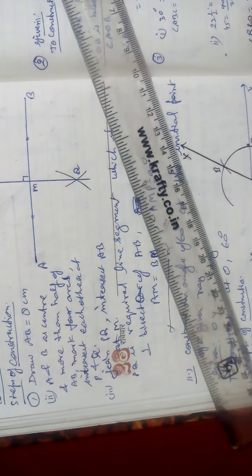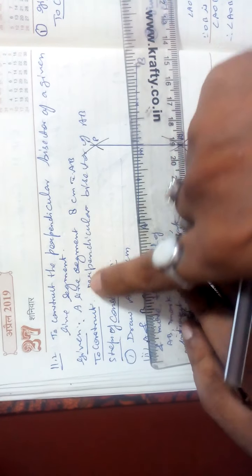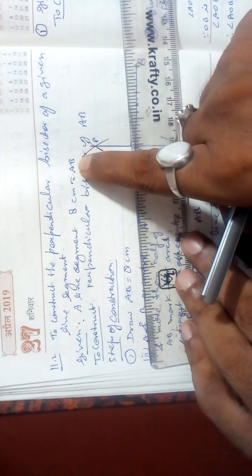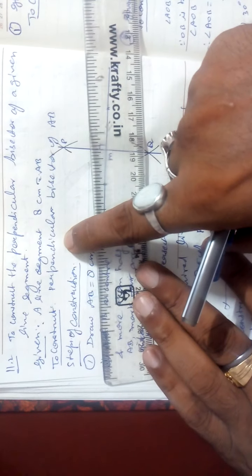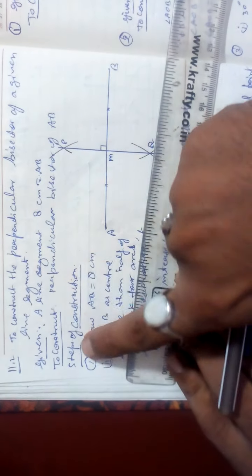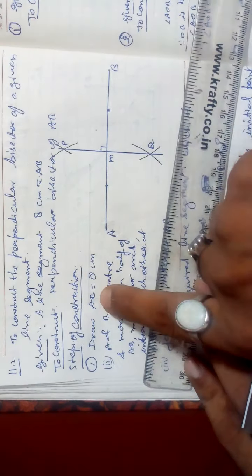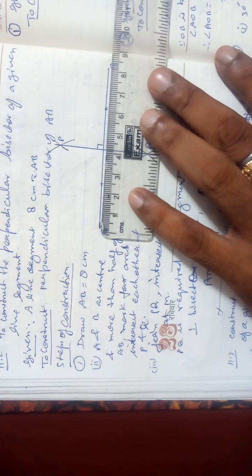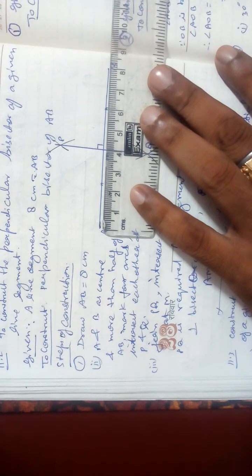For this, what will you do? Given: a line of 8 cm — I am taking AB. To construct the perpendicular bisector — this was also given in class 6. First step: draw a line of 8 cm.